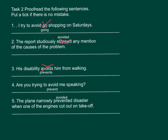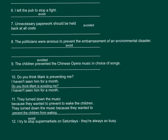Number 4: Are you trying to prevent me from speaking? — prevent takes an object and then a present tense verb. Number 5: The plane narrowly avoided disaster when one of the engines cut out on take-off — it should be 'avoided' instead of 'prevented.' Number 6: I left the pub to avoid a fight — meaning to prevent a fight from happening.